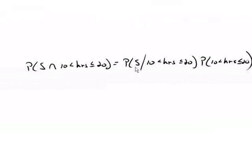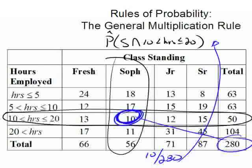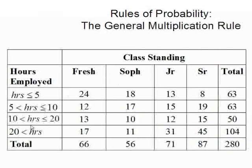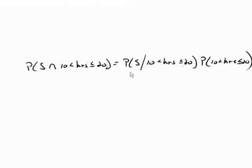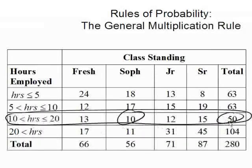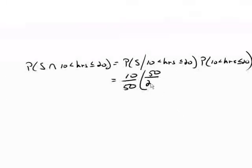See, the probability that they were a sophomore given 10 to 20 hours. Okay, let me clear this off. Given 10 to 20 is right here. Sophomores right here. So, that's 10 out of 50. So, that's the probability of a sophomore given 10 to 20 hours. That's 10 divided by 50 times the probability of between 10 and 20 hours. Okay, well, 10 to 20 hours is 50 over 280. So, this is 50 times 280. The 50s cancel and this is 10 out of 280.